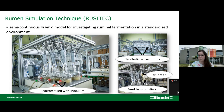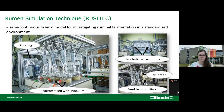In each reactor we have integrated a pH probe that allows us to continuously monitor real-time pH values, automatically recording them every minute. Additionally, each reactor is attached to a separate gas bag so that we can collect the produced gas per reactor and time point. We quantify the volume of produced gas every day and can also investigate different gas compositions, for example carbon dioxide, oxygen, and methane.